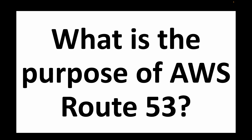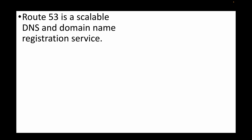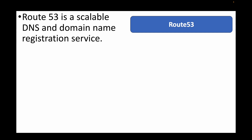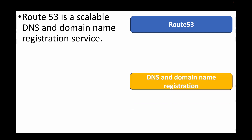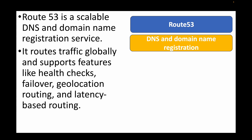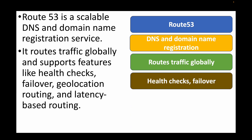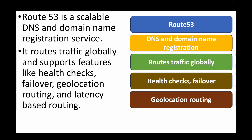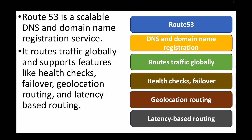The next question is: what is the purpose of AWS Route 53? Route 53 is AWS's scalable DNS service. DNS stands for Domain Name Service. It also supports domain name registration and provides various features like latency-based routing, health checks, failover, and geolocation routing. This makes it a key component for making your applications available globally, allowing you to route traffic globally and host applications around the world.